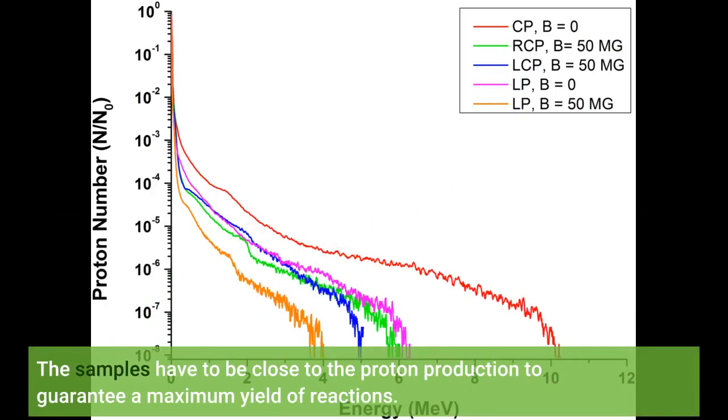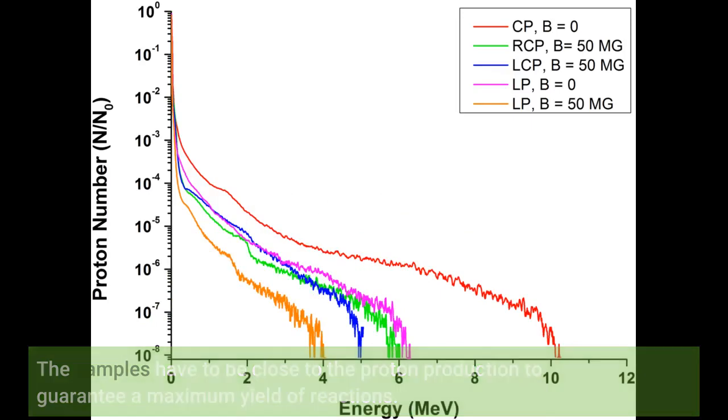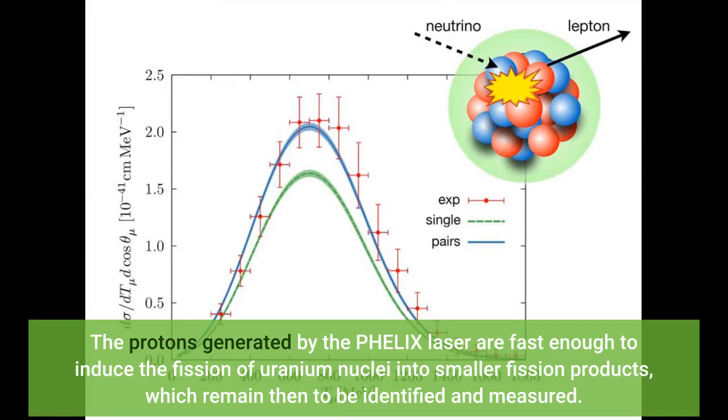The samples have to be close to the proton production to guarantee a maximum yield of reactions. The protons generated by the PHELIX laser are fast enough to induce the fission of uranium nuclei into smaller fission products, which remain then to be identified and measured.